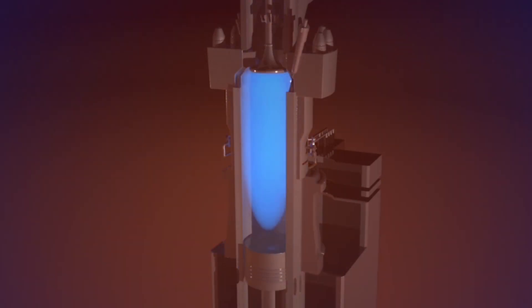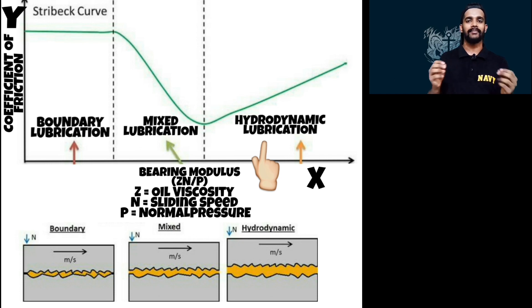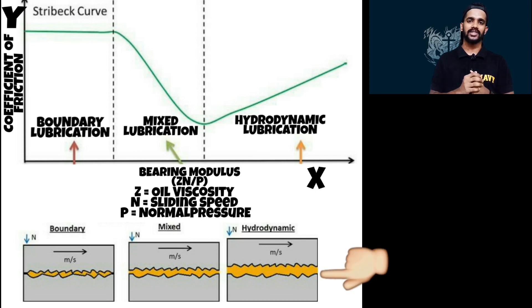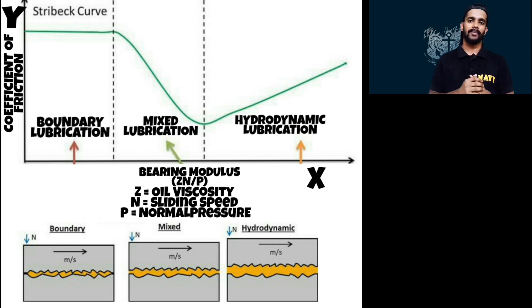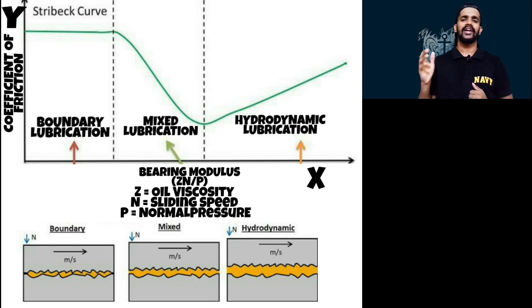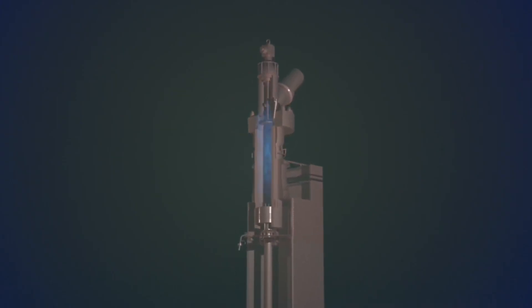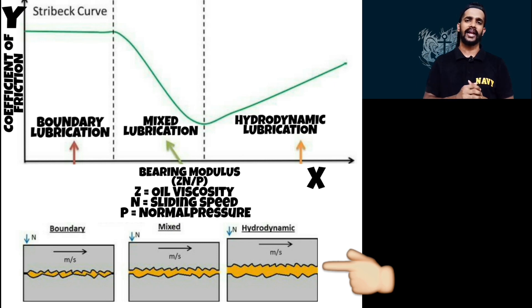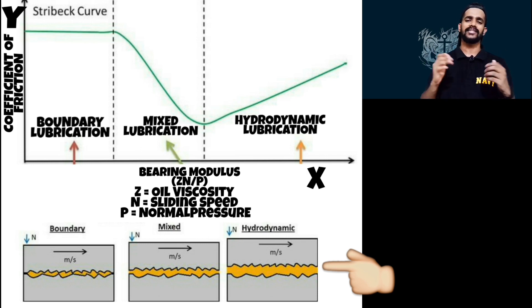We will take into consideration the example of piston and liner, talking through the entire cylinder oil lubrication principle connected to the Stribeck Curve. In hydrodynamic lubrication, the oil film thickness will be high, separating the two metal-to-metal contacts — in our case, piston and liner. No matter how smooth the surface is, there will always be asperities present between piston and liner, and these asperities are separated by a thick film of lube oil in hydrodynamic lubrication.